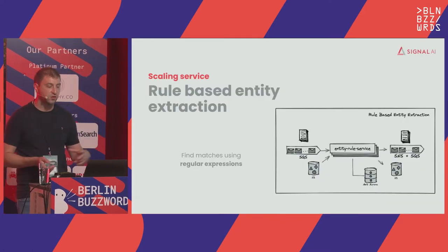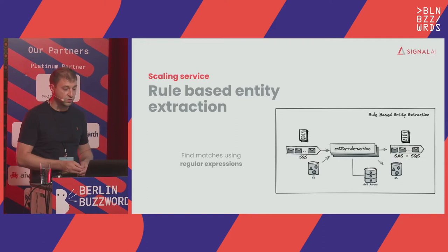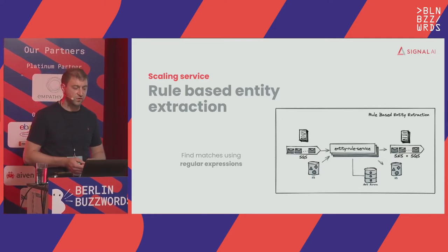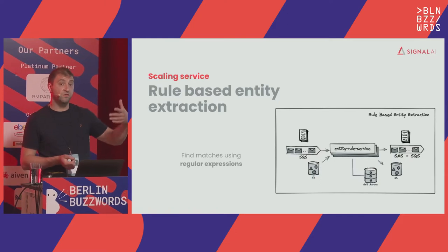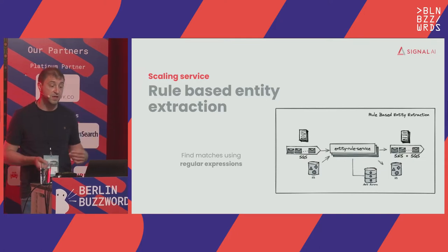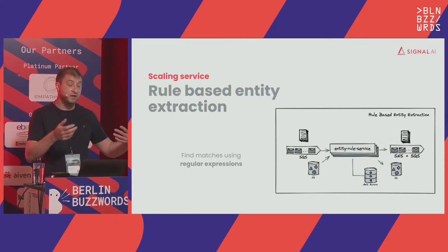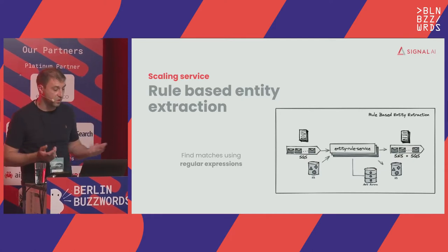Before explaining how we scaled the service, we need to understand how the existing rule entity extraction was working. The service was fairly straightforward: it took a collection of aliases, transformed them into regular expression patterns, kept them in memory, and as documents were flowing in, these regular expressions were applied.